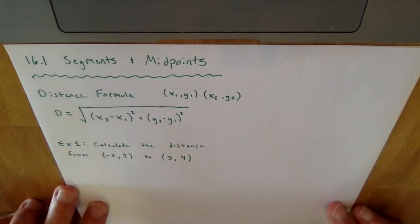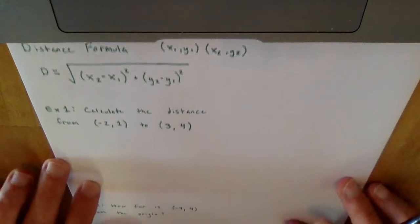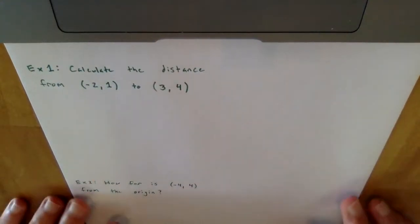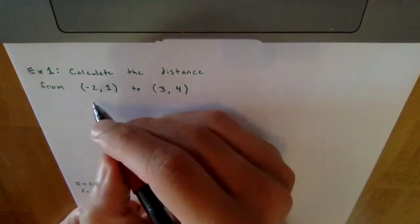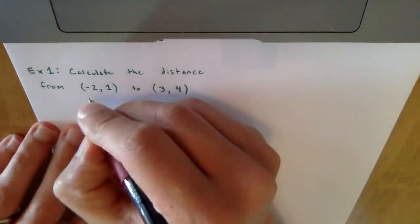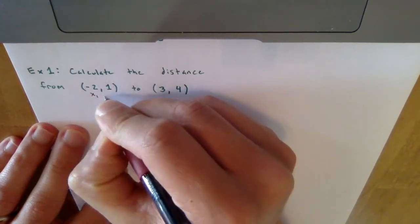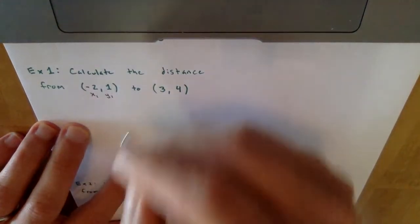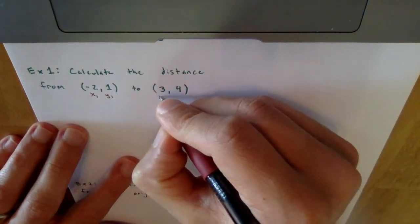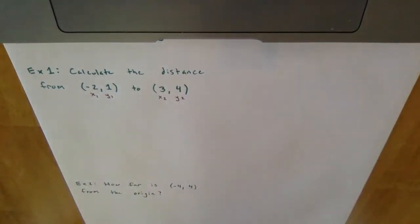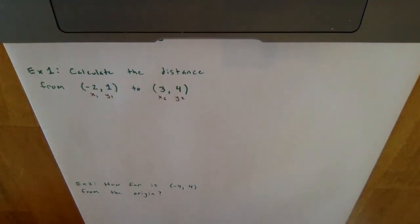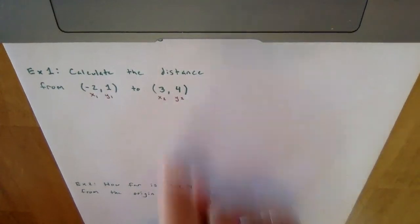The first problem asks me to calculate the distance between two points. We label the first point as x1 and y1, and the second as x2 and y2. It doesn't matter which point is which — you can do it either way — but the ones have to stay together and the twos have to stay together.